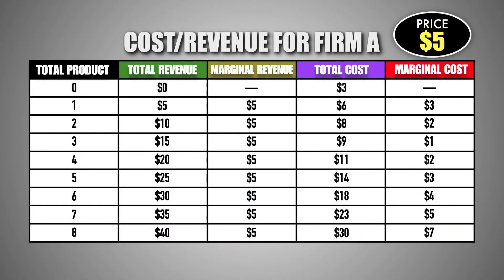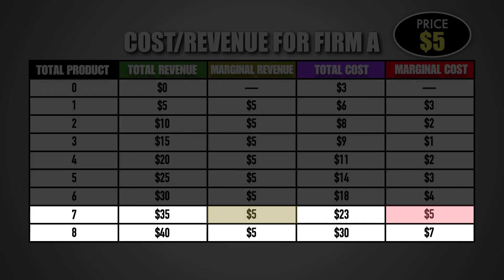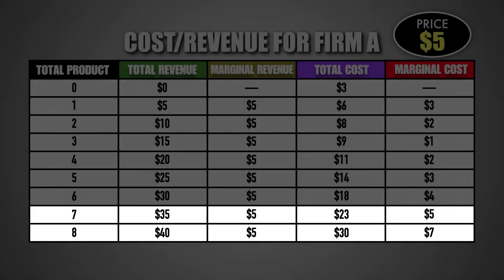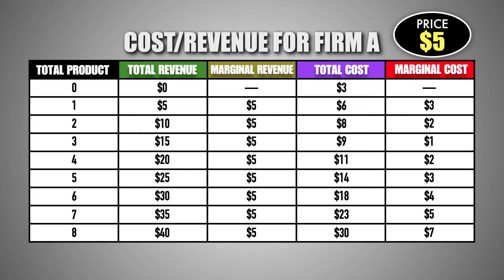However, now that variable costs have been reduced, the firm has an incentive to produce the seventh unit because its marginal revenue equals its marginal cost, meaning that the seventh unit is the last unit that the firm can produce before marginal cost becomes greater than marginal revenue. According to the Optimal Output Rule, the firm should increase production and produce seven units of good M in order to maximize profits.